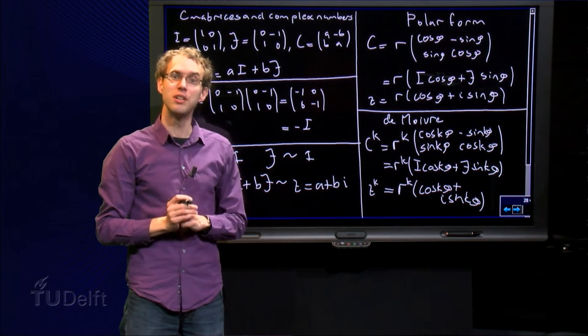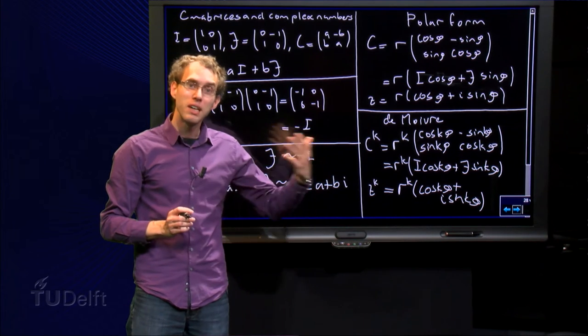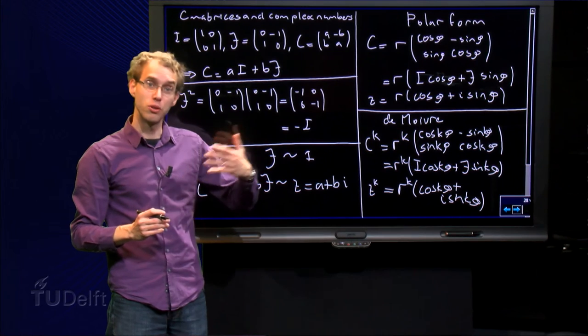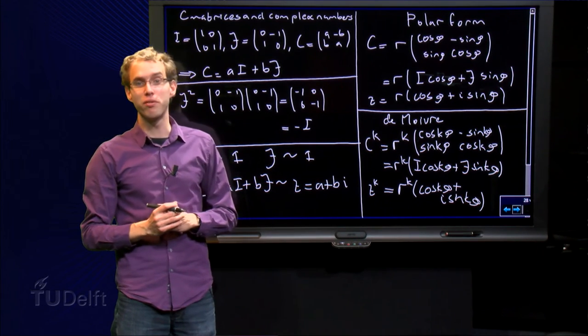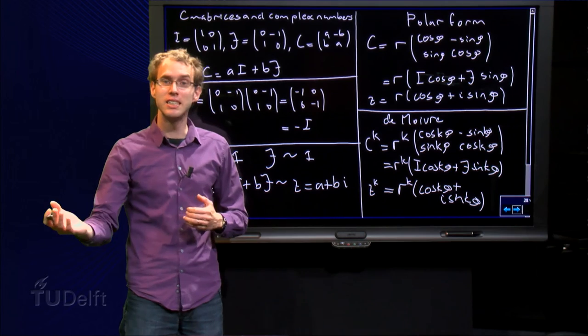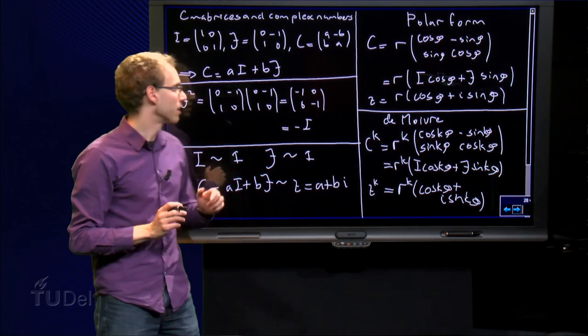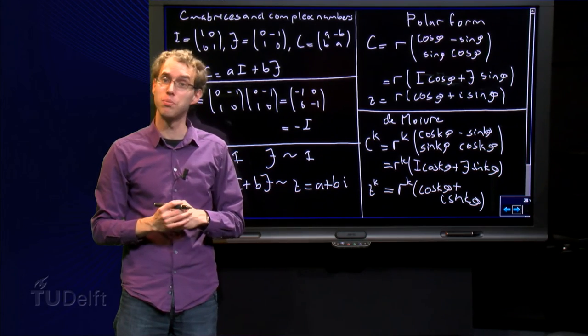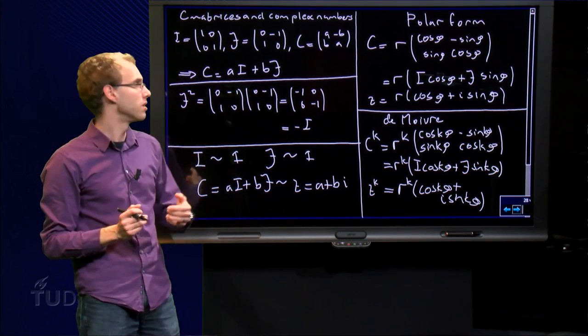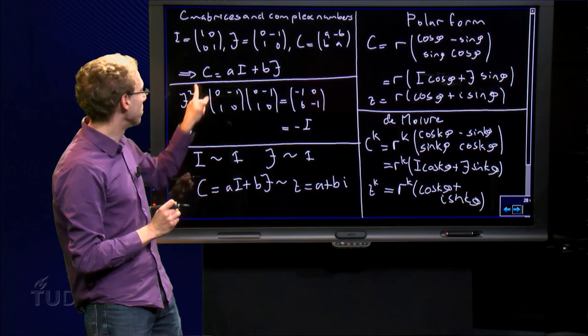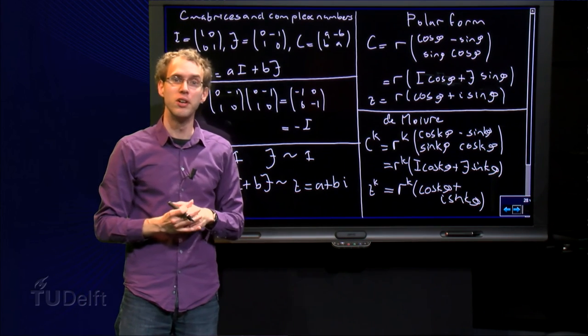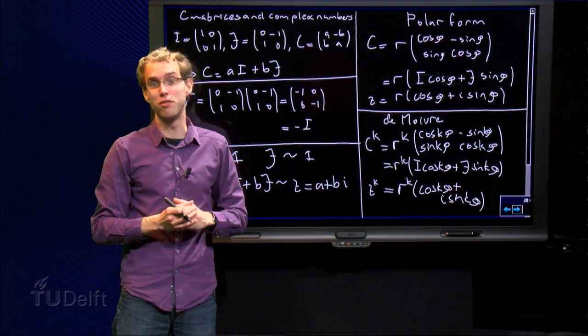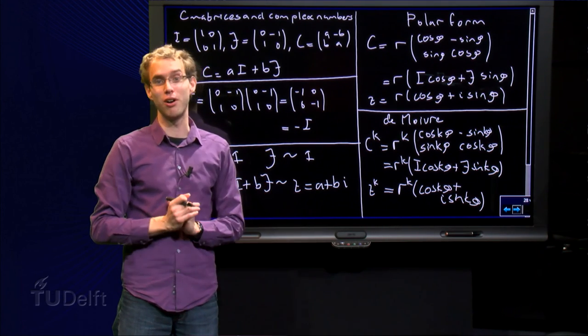So we see that it also looks exactly the same, and how are we going to use this? Well, in some cases a polar form of a complex number is more useful, in some cases a polar form of a C matrix is more useful, in some cases the Cartesian form of a complex number z equals A plus Bi is more useful, and sometimes the same Cartesian form of a C matrix is more useful. We want to remember this and always use the form which is most convenient for our computations.